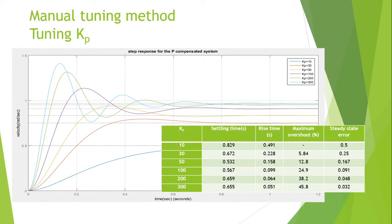First, we tune the Kp. Several values ranging from 10 to 300 are tested. The most optimal value of Kp is 100, which gives the shorter settling time and rise time. But the overshoot is quite high, which can be improved later by tuning Kd. The steady state error is also quite low.